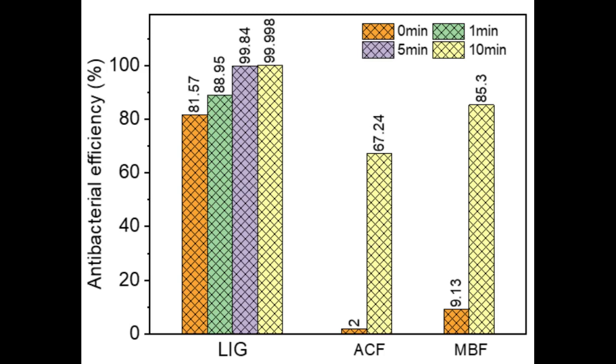while activated carbon fiber and melt-blown fabrics only showed an efficiency of 67% and 85% respectively.